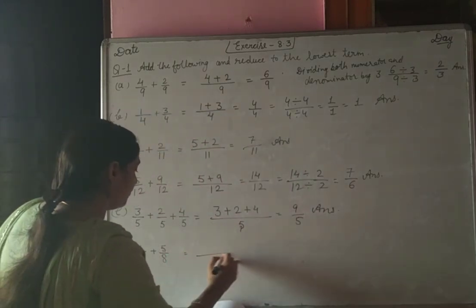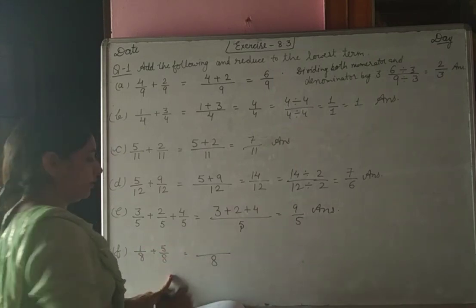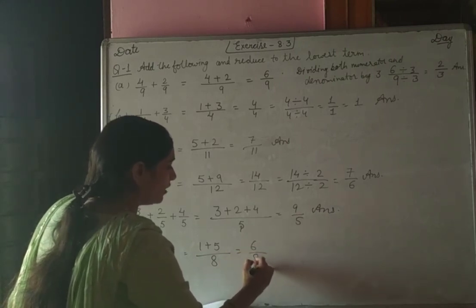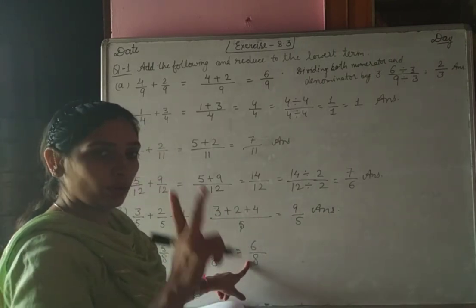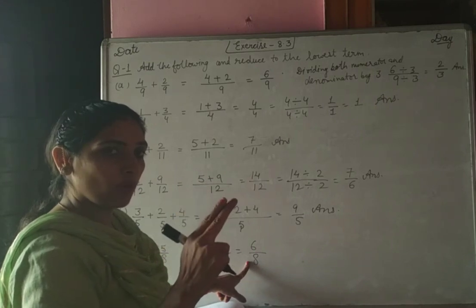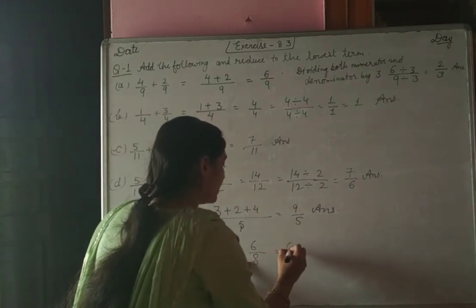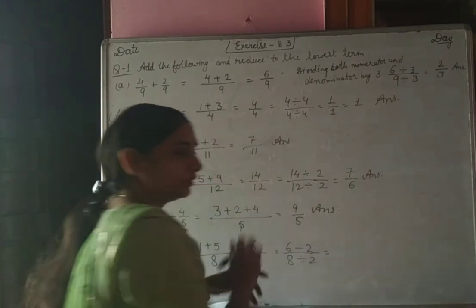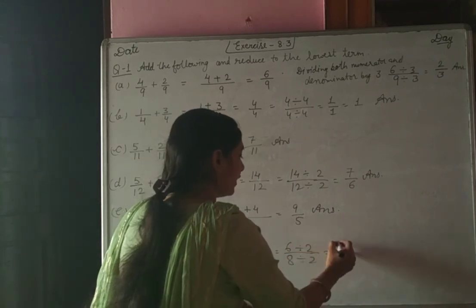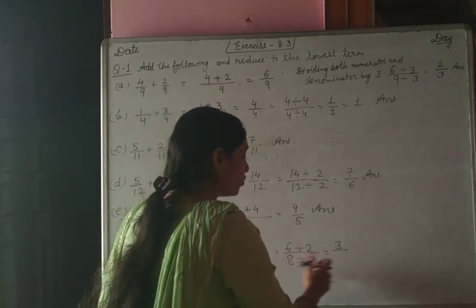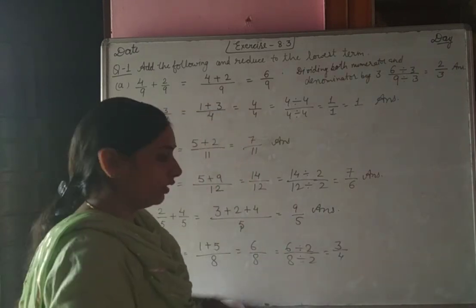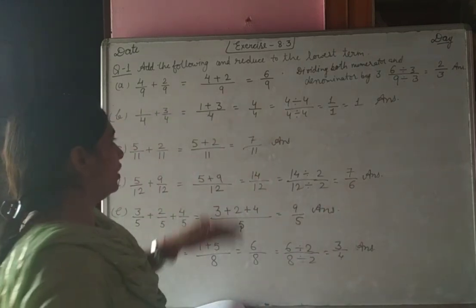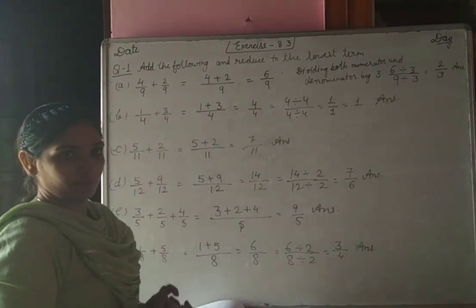Next: 1 by 8 and 5 by 8. Adding gives 1 plus 5 = 6 by 8. Again, 6 and 8 are both even numbers, so their common factor is 2. Dividing 6 by 8 by 2: numerator becomes 3, denominator becomes 4. So 3 by 4 is our answer in lowest term. In this way we add sums of fractions.